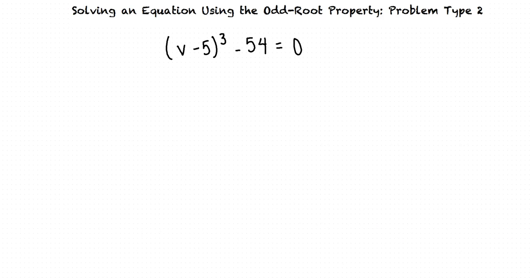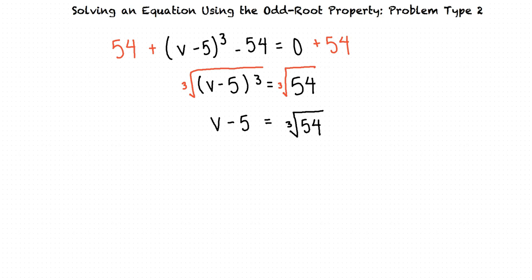Let's solve the quantity v minus 5 cubed minus 54 equals 0, where v is a real number. We first isolate the cubed expression by adding 54 to both sides. Then, because of the odd root property, we can take the cube root of both sides. Now we add 5 to both sides to isolate the variable v.